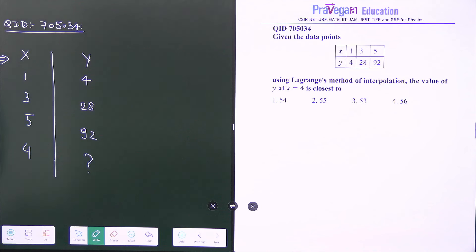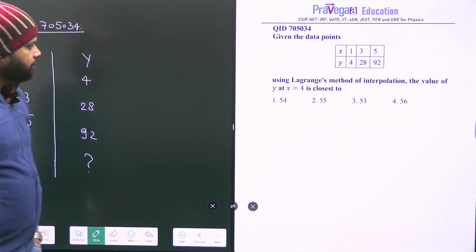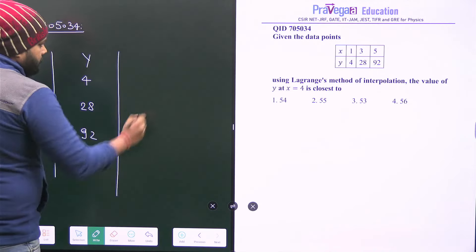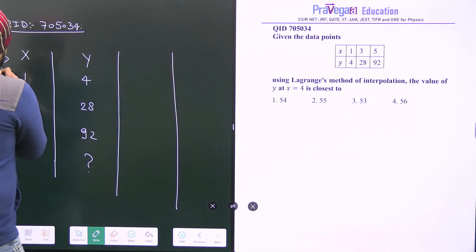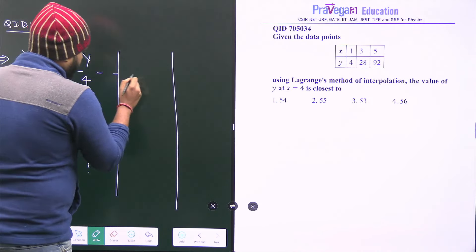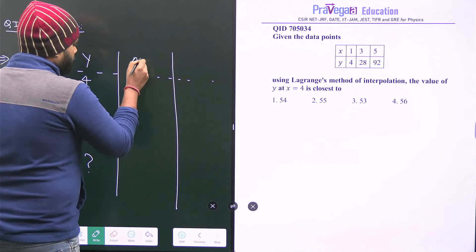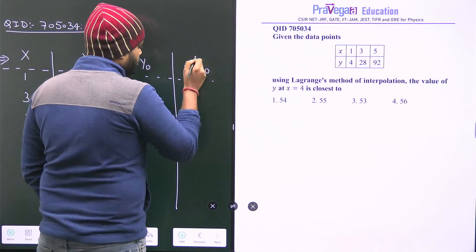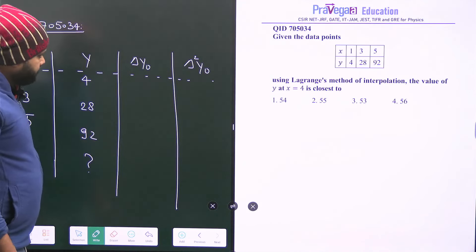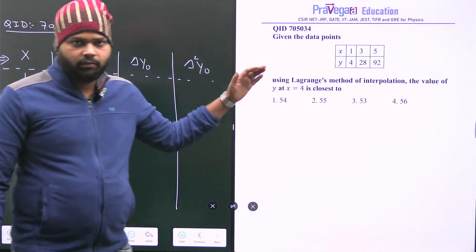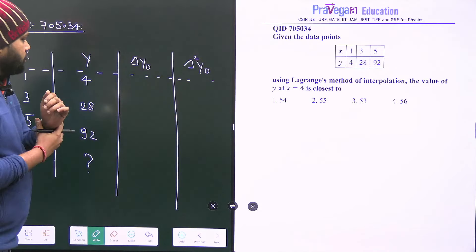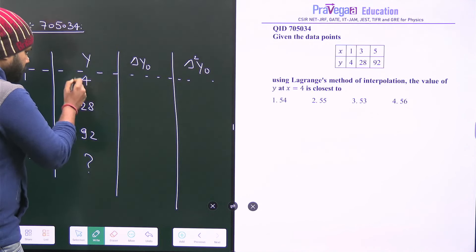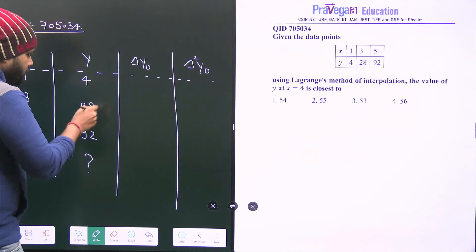So for this we need to make a table first of all and I will continue this table like this. Let's find out delta y0, delta square y0, because no need of delta cube because the term will vanish up to square portion. So how we have to find delta y0, delta y0, just we have to minus this upper one from this lower value.